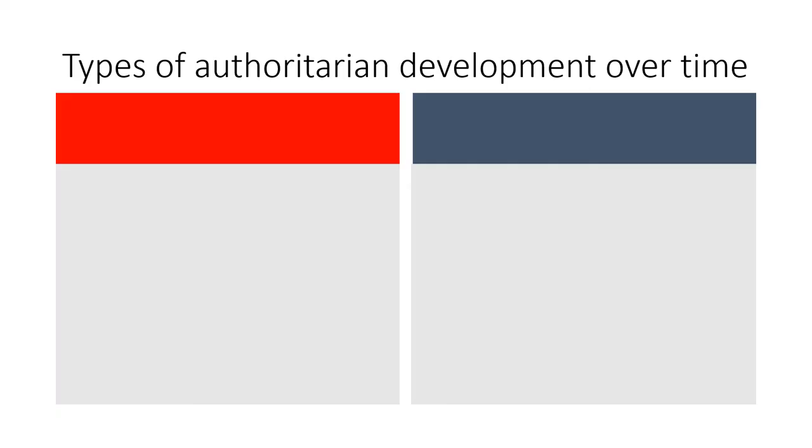Now that we understand what an authoritarian regime looks like, let's turn our attention to explaining how authoritarian regimes come to be. Political scientists have determined two different pathways to explain the existence of any particular authoritarian regime, and those two pathways are called authoritarian persistence and democratic breakdown. The first one, authoritarian persistence, means just what it sounds like: a country that has been authoritarian for a long time remains that way.